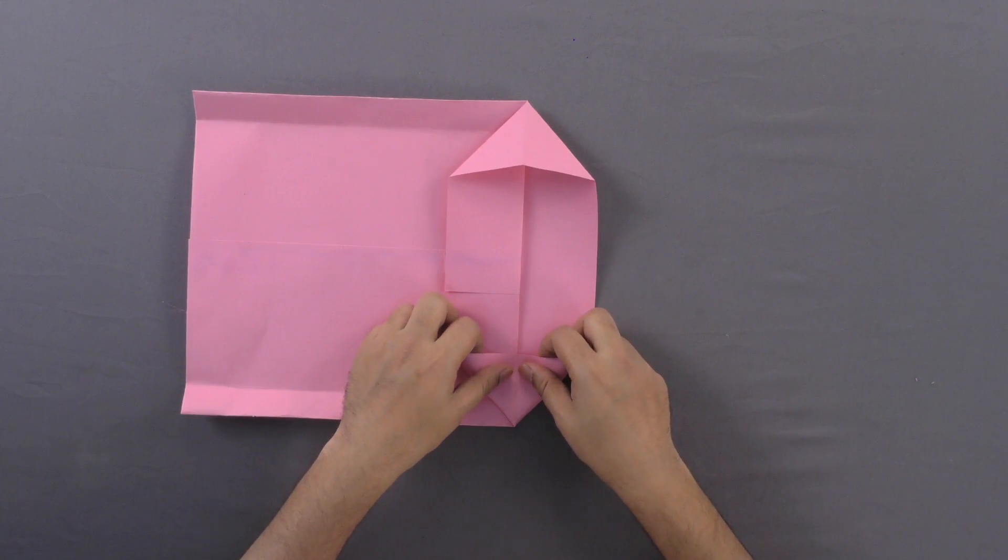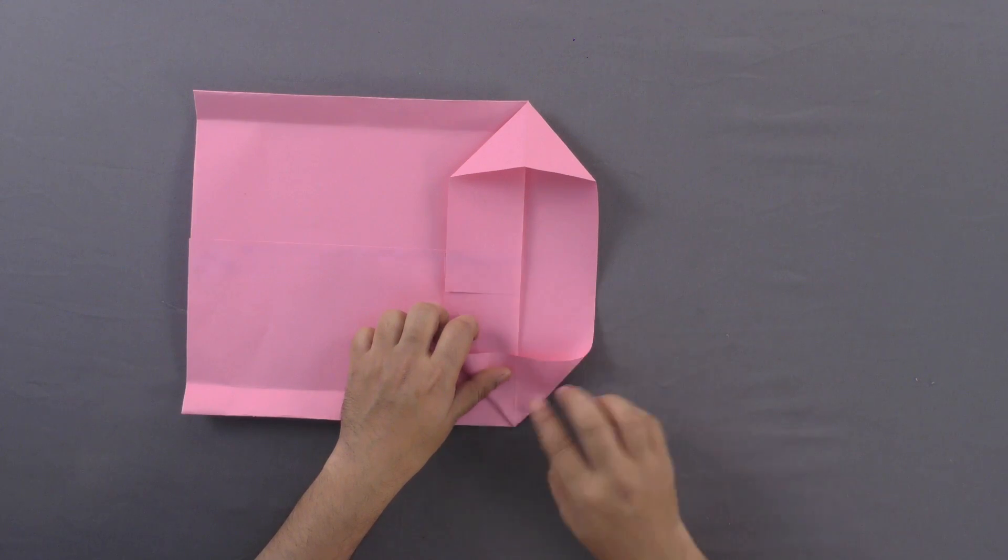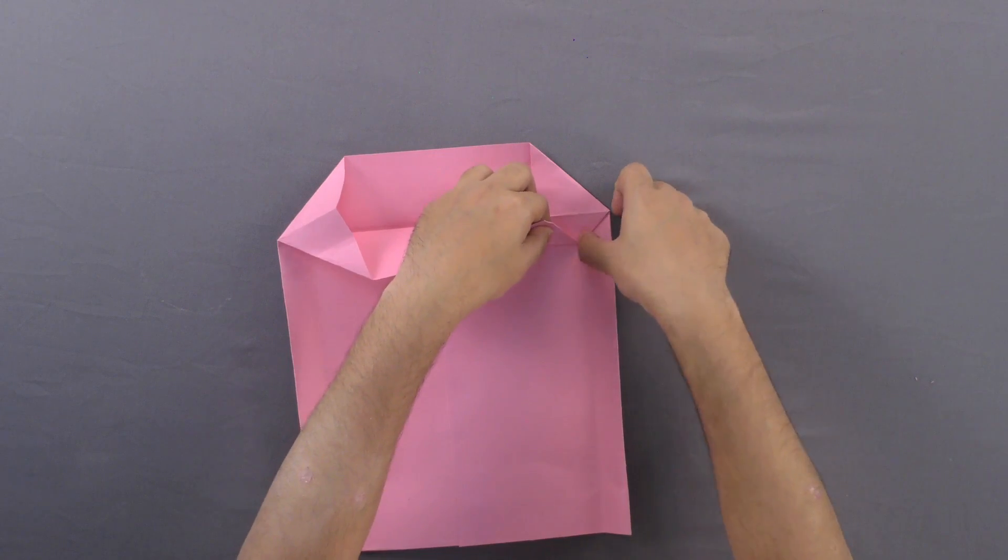Unfold the crease and fold the two corners inwards making two triangles.